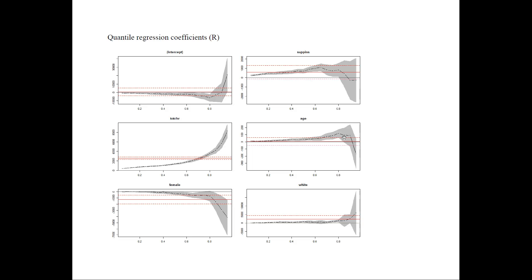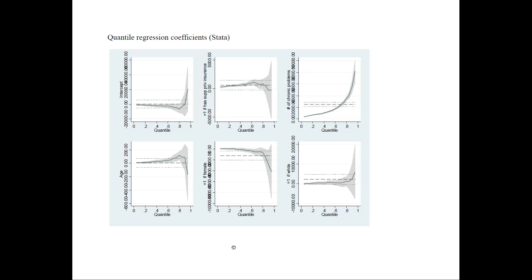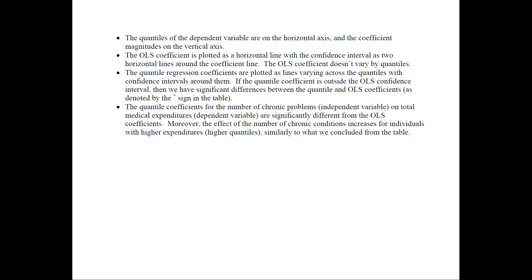The most interesting variable here is total chronic conditions. For other variables like age, there is no significant difference across quantiles. The Stata results on the next slide show the same conclusions with minor display differences. Finally, a summary slide lists all the key points discussed — pause and read them carefully to use these descriptions when writing your own research paper. Next, I will show you how to estimate these quantile regression models with different software.